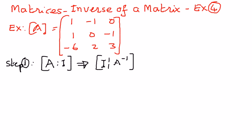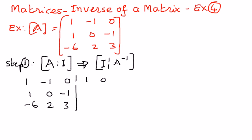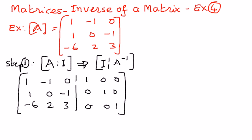So the given matrix is 1, negative 1, 0, and then 1, 0, negative 1, and then negative 6, 2, 3. We'll partition it, and then the identity matrix will be a 3 by 3 matrix. We can write that as 1, 0, 0, then 0, 1, 0, and then 0, 0, 1. One of the properties of a 3 by 3 identity matrix is that the elements along the major diagonal should be 1s, and the elements elsewhere should be 0s.